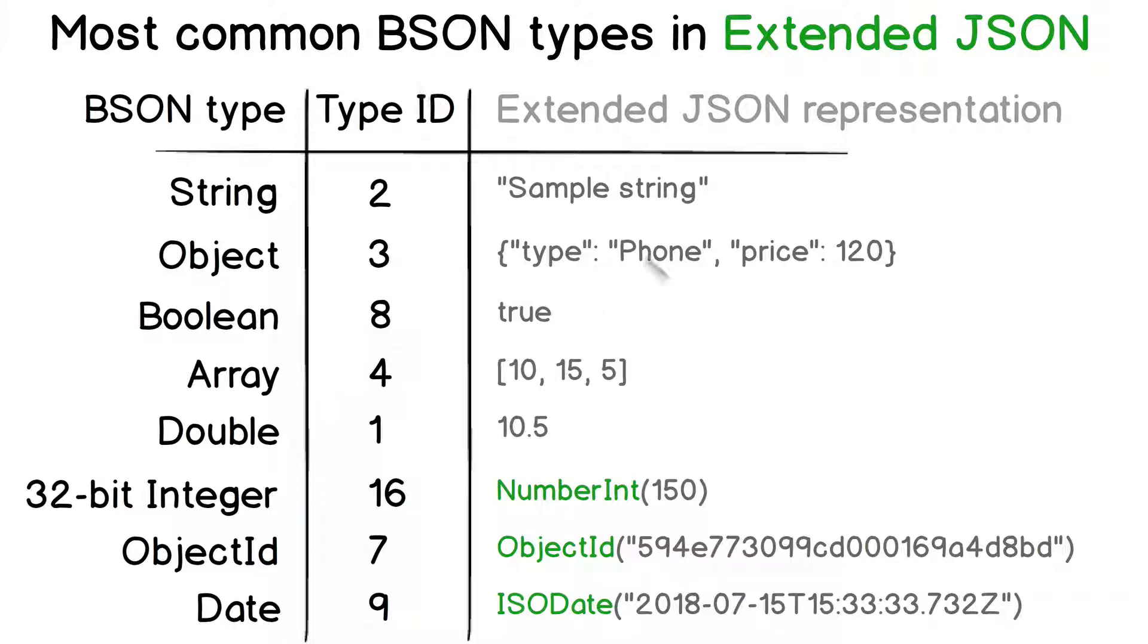Let's now look at those most commonly used BSON types. You may see that String, Object, Boolean, Array, and Double don't have any prefix.